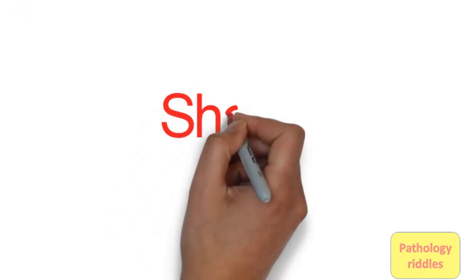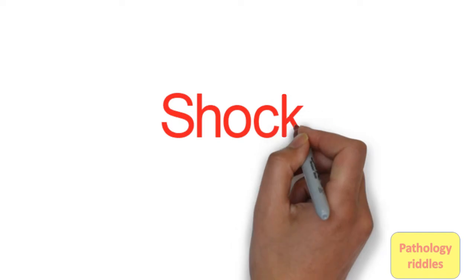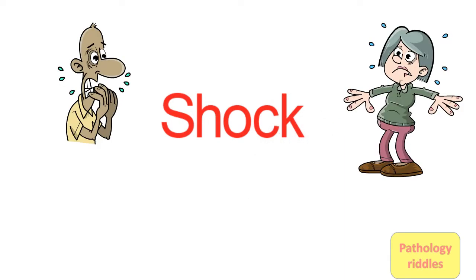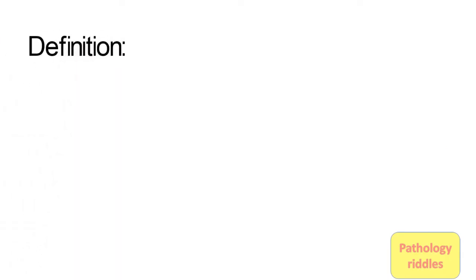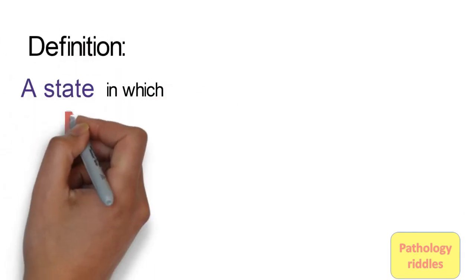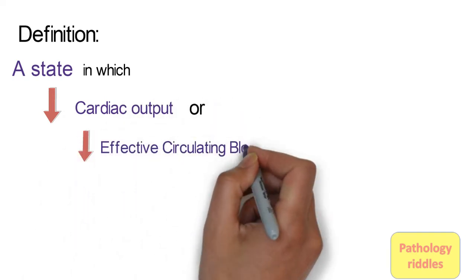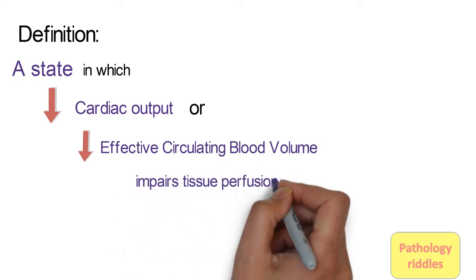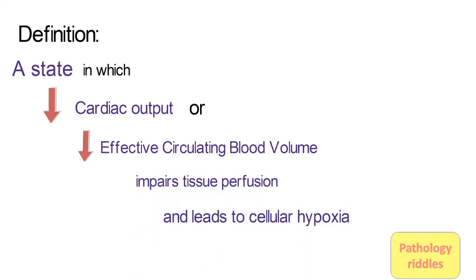Hi, welcome to Pathology Riddles. Today we will be dealing with this topic called shock and its types. So what is shock? The definition says that it's a state in which decreased cardiac output or decreased effective circulating blood volume impairs tissue perfusion and leads to cellular hypoxia.